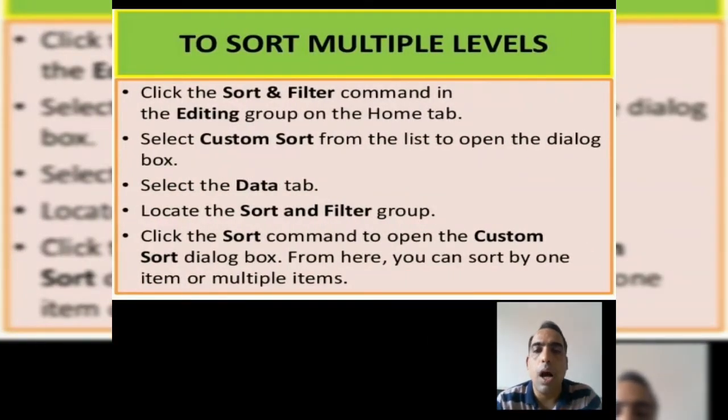Now I will explain how to sort in multiple levels. Step 1, click the sort and filter command in the editing group on the home tab. Step 2, select custom sort from the list to open the dialog box. Step 3, select the data tab.